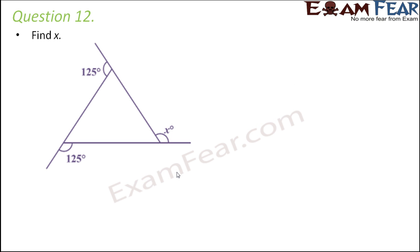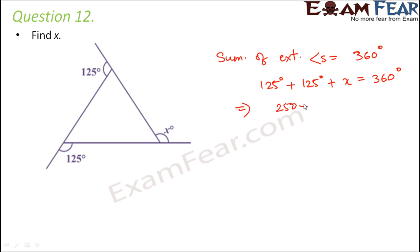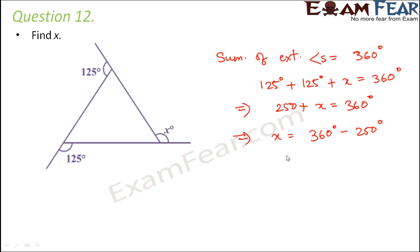Question number 12: We have to find x in this diagram. The angles given are all exterior angles. We know that the sum of exterior angles of any polygon is always equal to 360 degrees. So: 125 plus 125 plus x equals 360 degrees, or 250 plus x equals 360 degrees, therefore x equals 360 minus 250 which equals 110 degrees. So the value of x is 110 degrees.